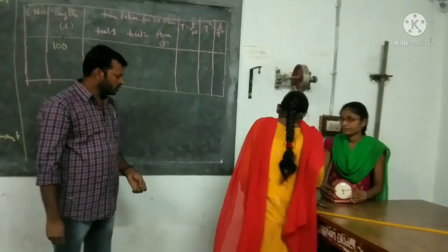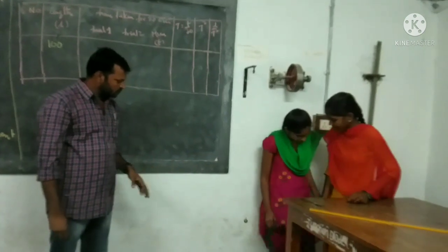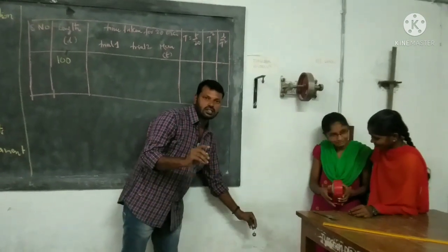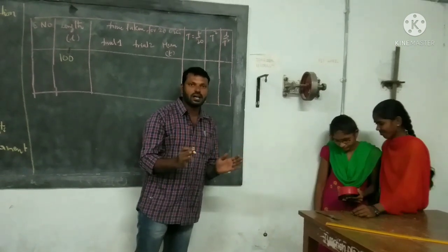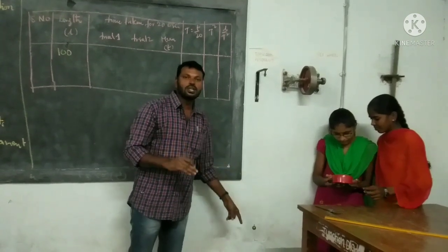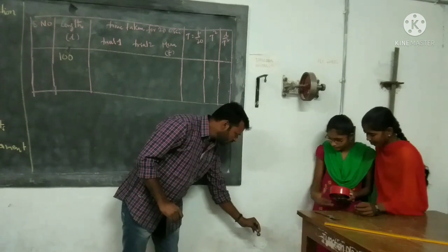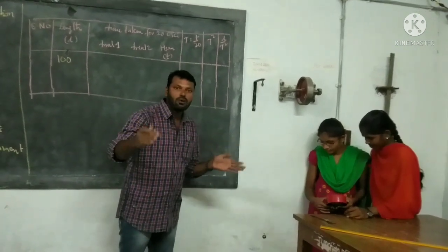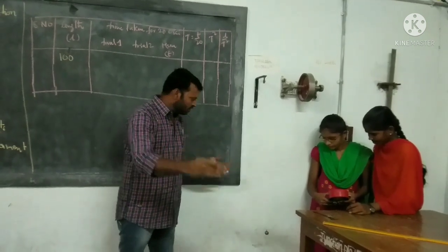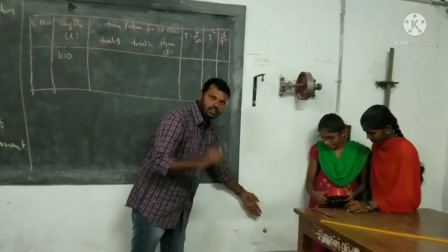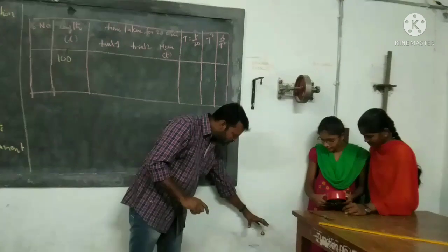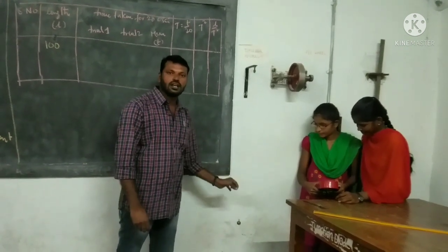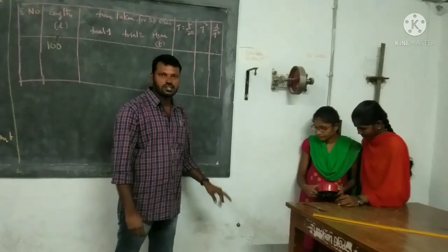Now take the stopwatch. Pull the metal bar slightly to the side and release it. Always keep the oscillation amplitude very small so that it executes simple harmonic motion — otherwise you will get more errors. Just slightly pull it and let it start oscillating. The amplitude does not affect the time period; whether moving from here to here or a wider swing, it gives the same time period.